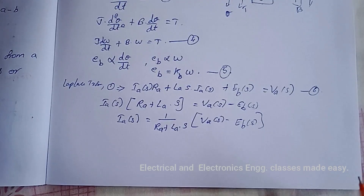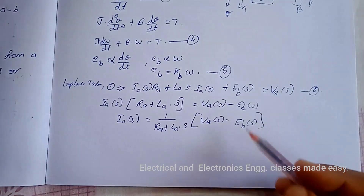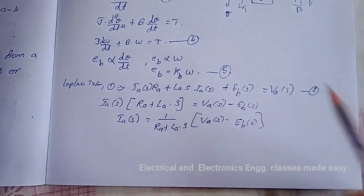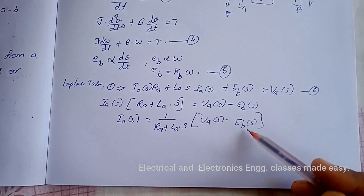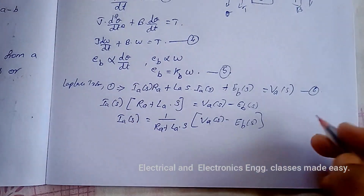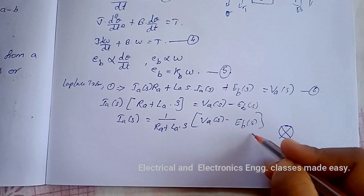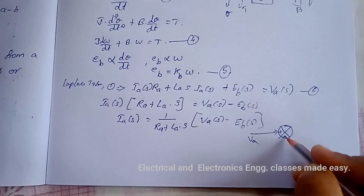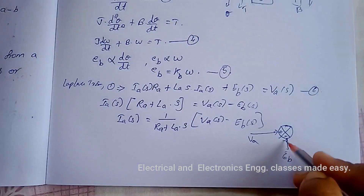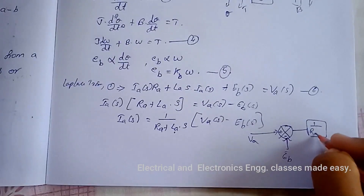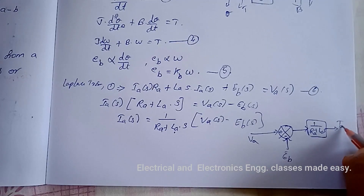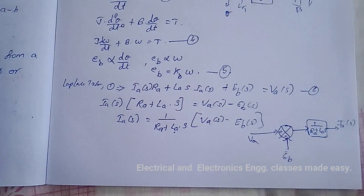From this we can draw the block diagram. There is a summing point with signals V_A(s) and −E_B(s). The transfer function is 1/(R_A + L_A·s), and the output is I_A(s). So the block diagram for the first equation is: V_A(s) minus E_B(s) at the summing point, then the block with transfer function 1/(R_A + L_A·s), giving output I_A(s).